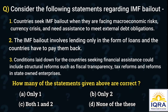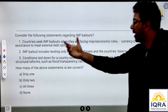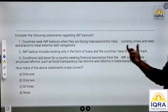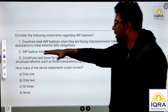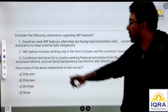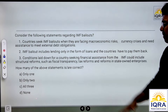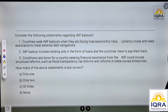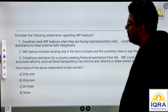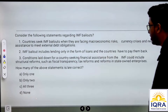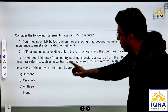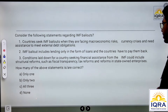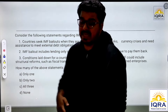Consider the following statements regarding IMF bailouts. First statement: countries seek IMF bailout when they are facing macroeconomic risk, currency crisis, and need assistance to meet external debt obligations. Second statement: IMF bailout includes only in the form of loans and the countries have to pay them back. Third: conditions laid down for a country seeking financial assistance from the IMF could include structural reforms, fiscal transparency, tax reforms, and reforms in state-owned enterprises. Which of these are correct?